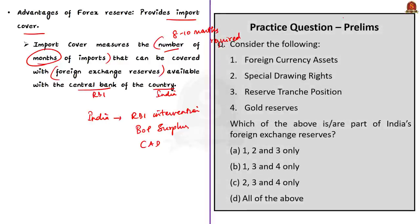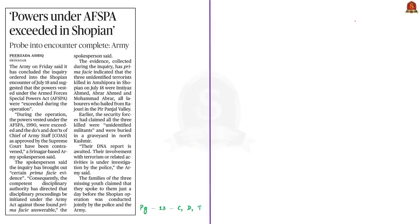The next news article discusses the inquiry conducted on the Chopian Encounter that happened in July in the Kashmir Valley. Based on the inquiry, the Indian Army has concluded that the powers vested under AFSPA — the Armed Forces Special Powers Act — were exceeded during the operation. Further, the do's and don'ts of the Chief of Army Staff as approved by the Supreme Court have also been contravened. In this context, you need to know about AFSPA from the exam perspective.